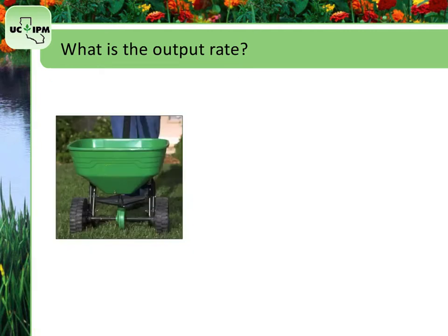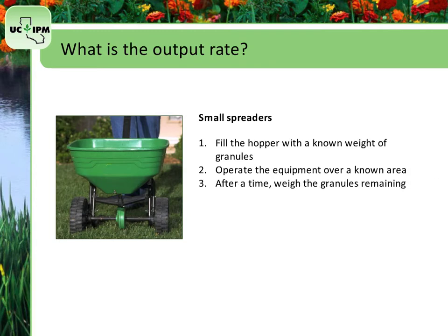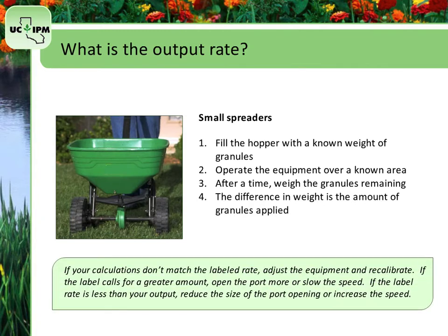For smaller spreaders such as hand-operated equipment or hand-push spreaders, fill the hopper with a known weight of granules and operate the equipment over a known area. After a known amount of time, weigh the granules remaining in the spreader. The difference in the weight is the amount of granules applied to the area. If your calculations do not match the labeled rate, then you need to adjust the equipment and recalibrate.